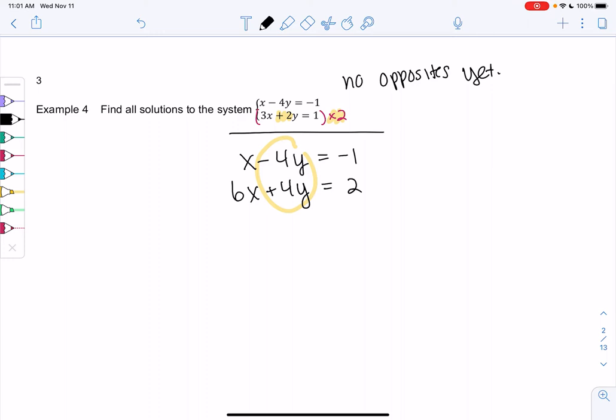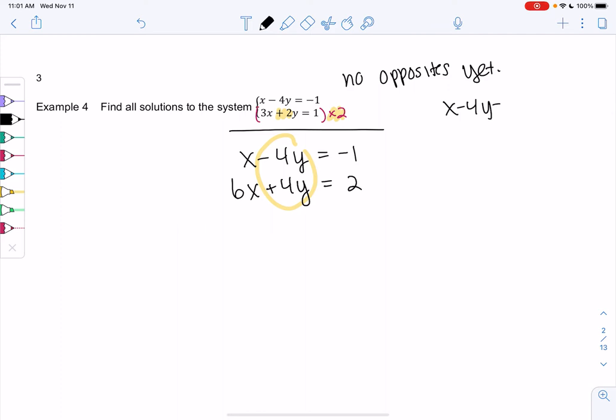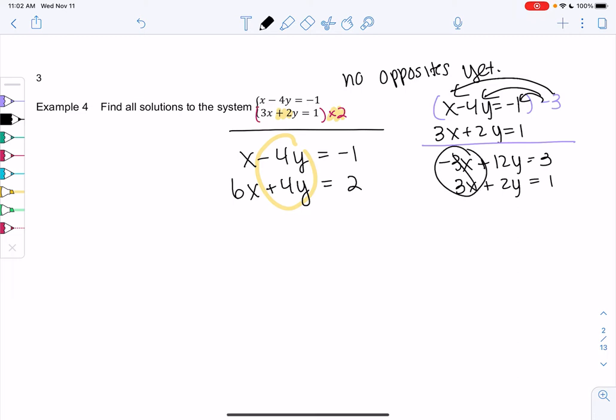You don't have to eliminate y's. You could also eliminate x's. If I wanted to eliminate x's, I'm not going to do that for this one, but I would have multiplied the first equation by negative 3 to make opposites. So we would get negative 3x plus 12y equals 3. And then second equation stays the same. And again, you have opposites. So there's more than one path to get to the solution. But I'm going to stick with the first one I did. So we get x plus 6x is 7x. The y's eliminate, and we get equals 1.